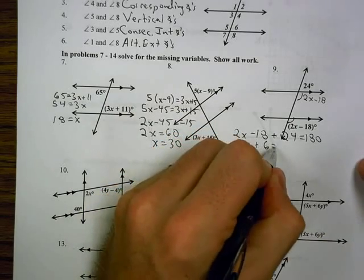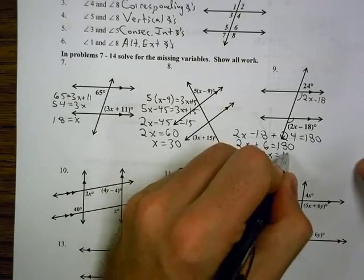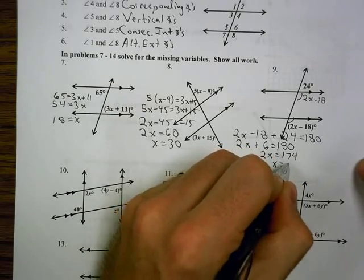2x minus 18 plus 24 equals 180. 2x plus 6 equals 180. 2x equals 174, so x is 87.